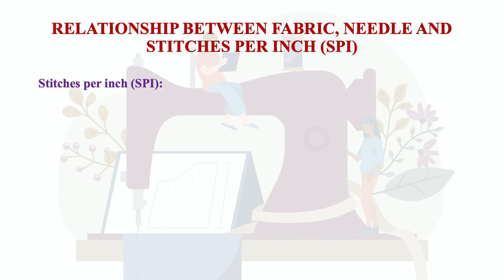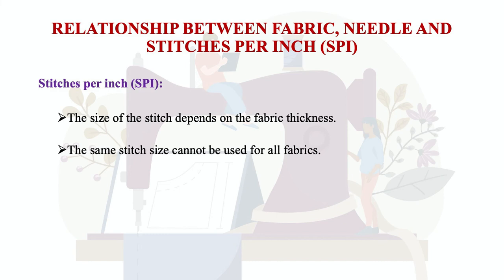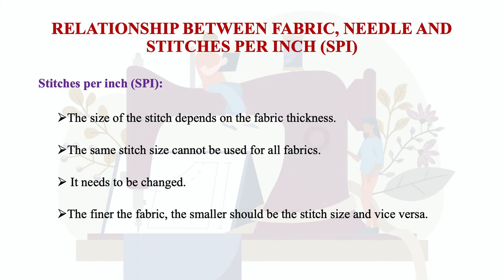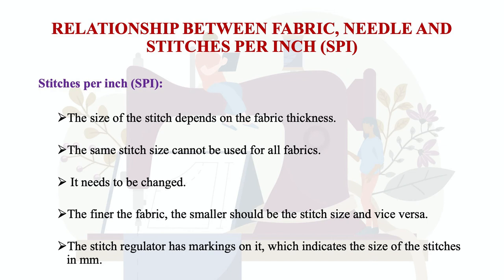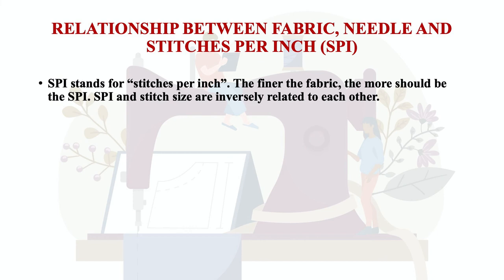Stitch per inch, abbreviated SPI, is very important to understand. The size of the stitch depends on the fabric thickness, and the same stitch size cannot be used for all types of fabric — it needs to be changed according to the fabric type. The finer the fabric, the smaller the stitch size, and vice versa. The stitch regulator on the sewing machine has markings you can adjust when using different types of fabric. SPI stands for stitch per inch: the finer the fabric, the more should be the SPI.